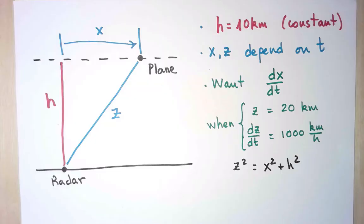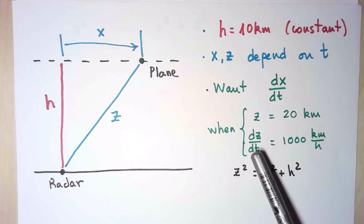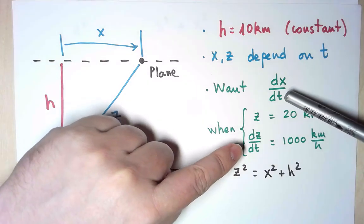The rest is computations. Now that the problem is modeled, we use calculus to solve it. I want the derivative of x. I know the value of the derivative of z, so I need a relation between both derivatives.